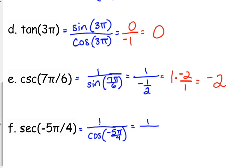But it's negative 5 pi over 4, so we go directly above it. So that is negative square root of 2 over 2. Or if you flip it over, it's just negative 2 over the square root of 2.